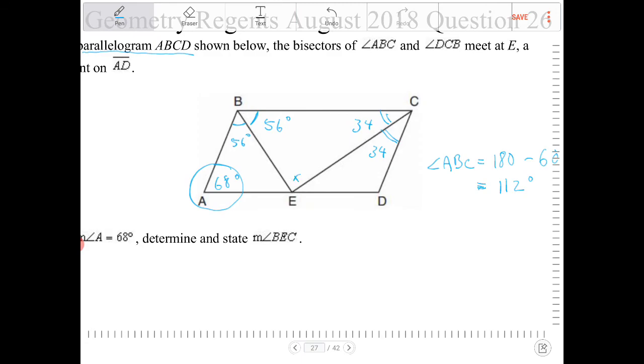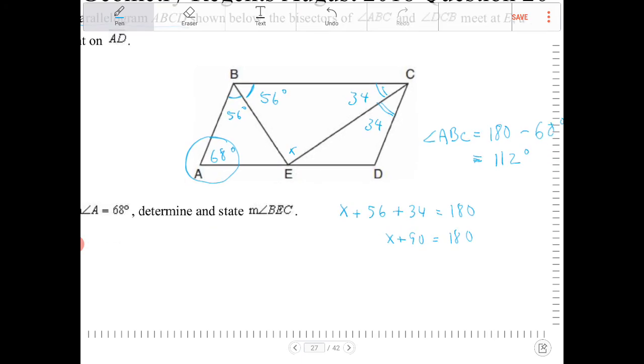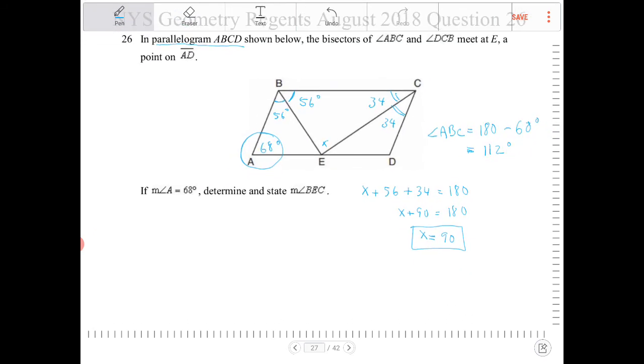So let's call this angle here X, right, angle BEC. So I know that X plus 56 plus 34 should equal to 180. 56 plus 34, that's 90. Let's subtract 90 from both sides. X, therefore, is equal to 90. So that means angle BEC must be 90 degrees.